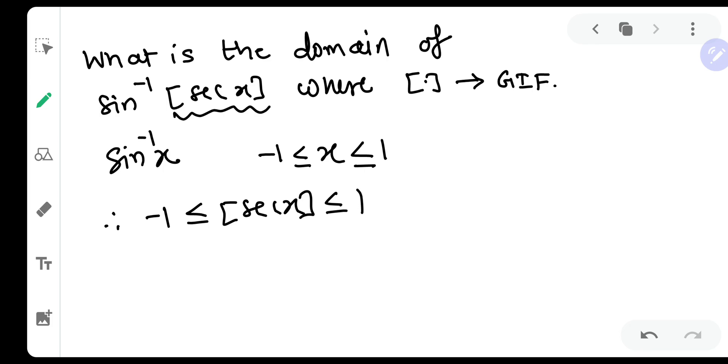But naturally, GIF is a greatest integer function, so you can see that GIF of sec x can be minus one, zero, or one. There are only three values possible for GIF of sec x. Now let us look one by one at all the possibilities.